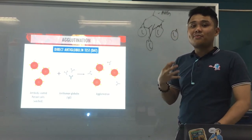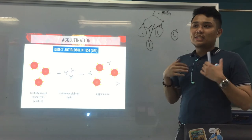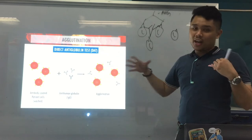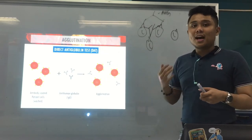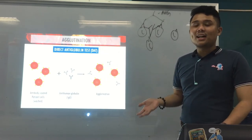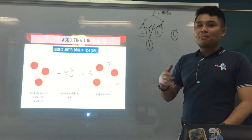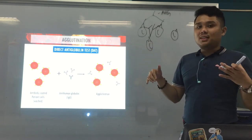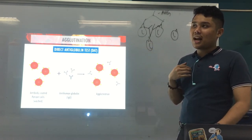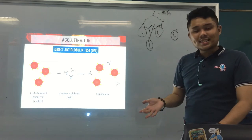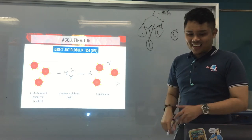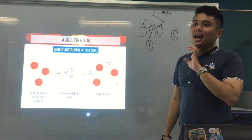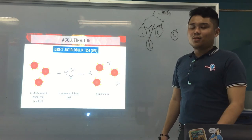The point of the DAT is that in vivo sensitization occurred — inside the body, the binding of antibody to RBCs already happened. It's non-agglutinating, meaning the antibody coated the RBCs without causing agglutination. But the danger is it can lead to hemolysis. More detail on this in your blood banking.